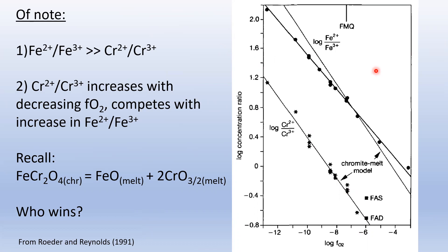In terms of the overall effect on chromite solubility: recall the dissolution reaction. Both Fe²⁺ and Fe³⁺ can dissolve into the chromite structure, but the only chromium species that goes into chromite is Cr³⁺. Therefore, that ends up being the controlling factor for how oxygen fugacity affects solubility. As we increase the amount of Cr²⁺ — meaning we decrease the amount of Cr³⁺ — that causes the reaction to shift to the right and actually increases the chromite solubility in the melt.